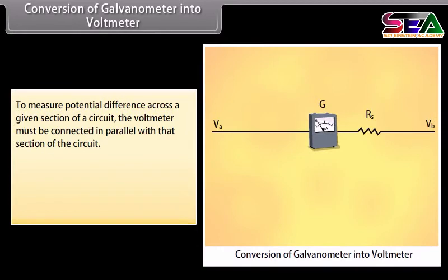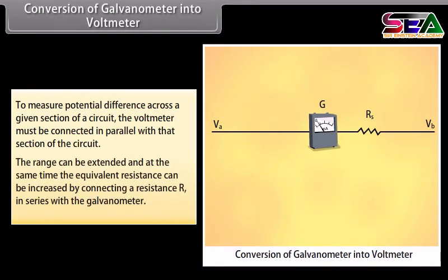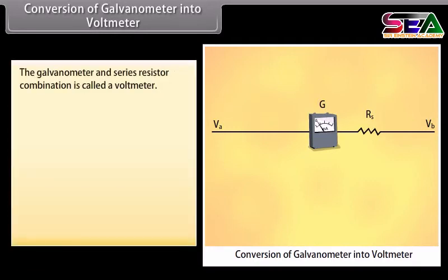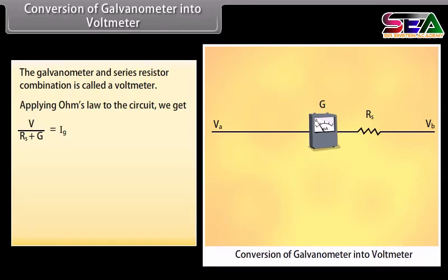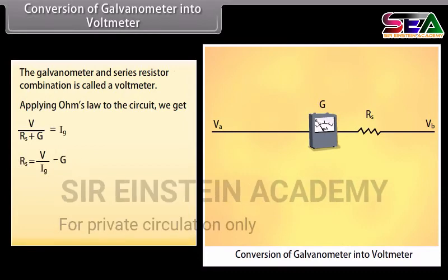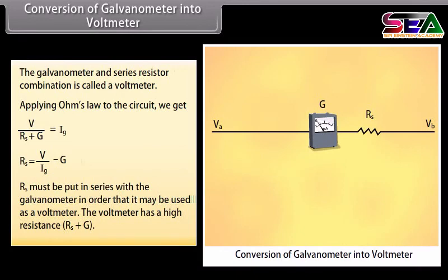Conversion of galvanometer into voltmeter: To measure potential difference, the voltmeter is connected in parallel with the circuit section. The range is extended and resistance increased by connecting a resistor RS in series with the galvanometer — this combination is called a voltmeter. Applying Ohm's law: V / (RS + G) = IG, giving RS = V / IG - G. RS must be put in series with the galvanometer for use as a voltmeter. The voltmeter has a high resistance of (RS + G).